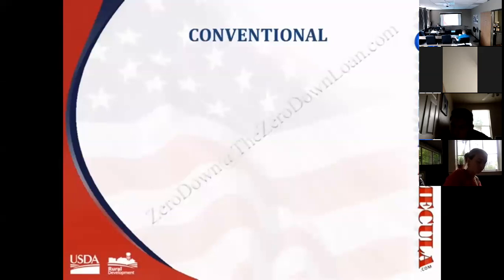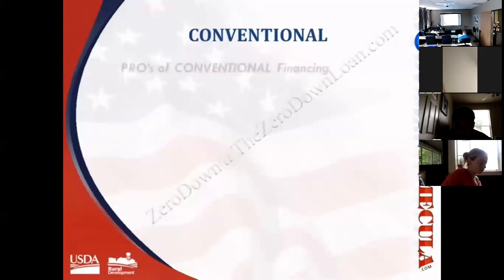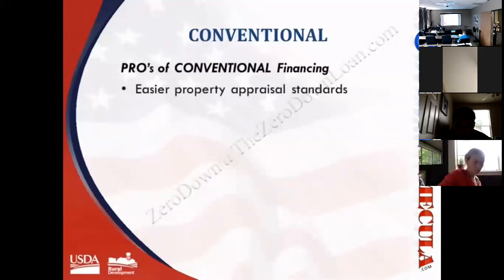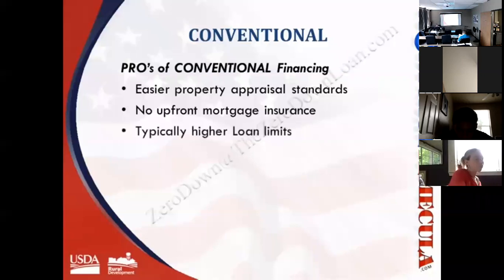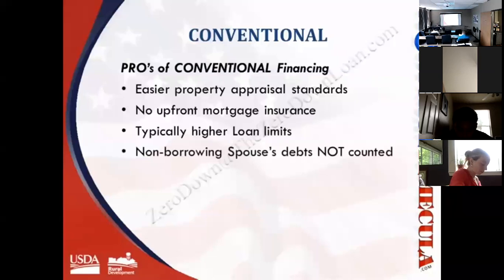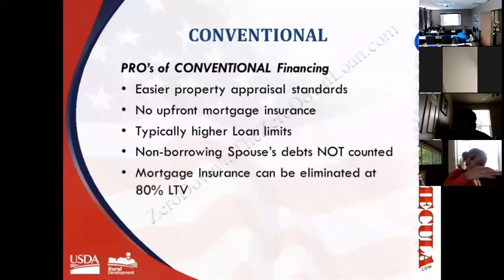Conventional loan pros include less rigorous property appraisal requirements, no upfront mortgage insurance, typically higher loan amounts, and the spouse's debts do not have to be counted against the borrower when qualifying. So if your spouse has monthly debts not on your credit report, that does not lower your buying capacity. There is also no mortgage insurance required under certain conditions.